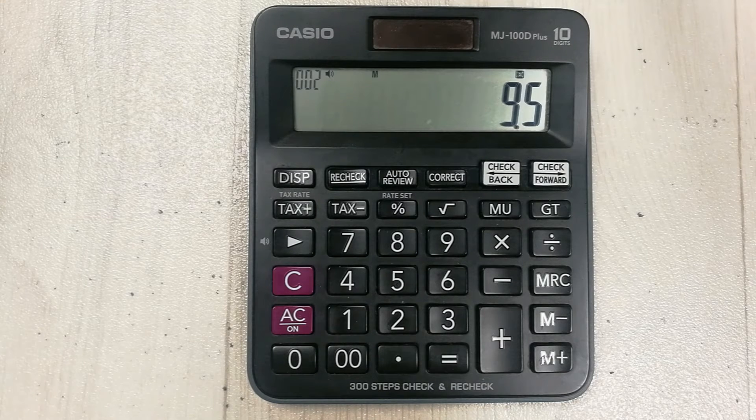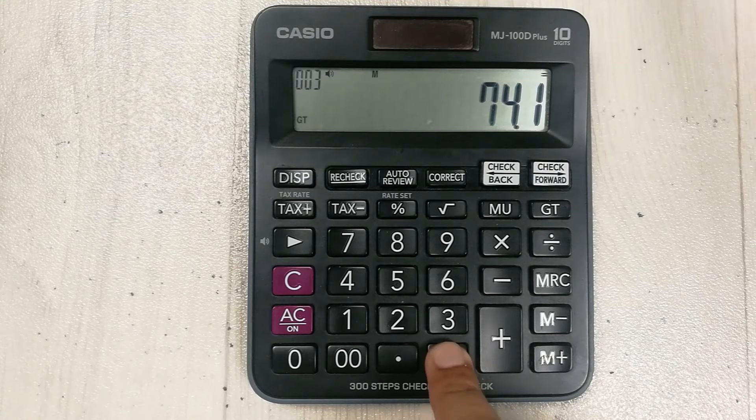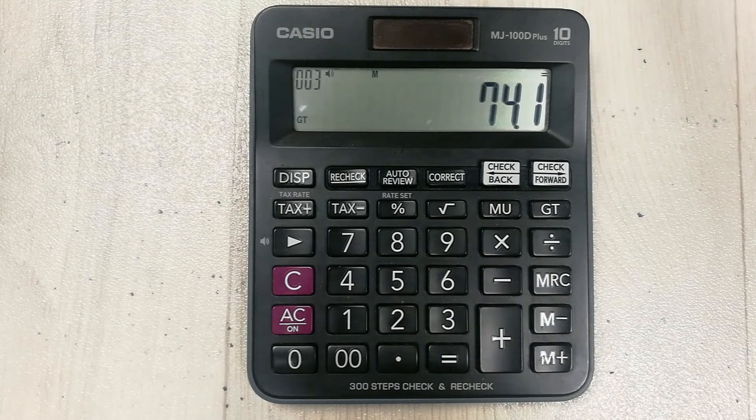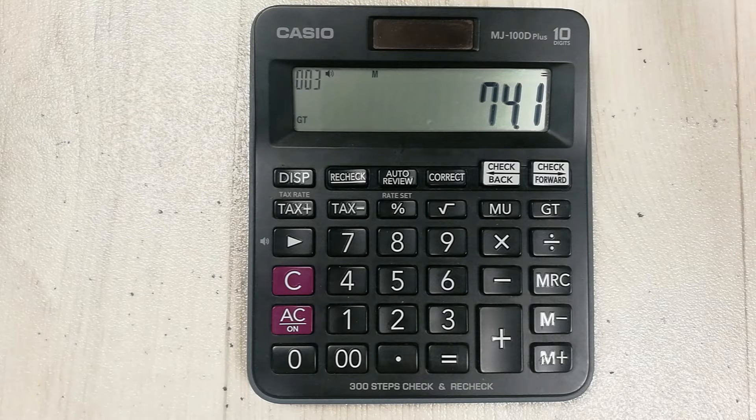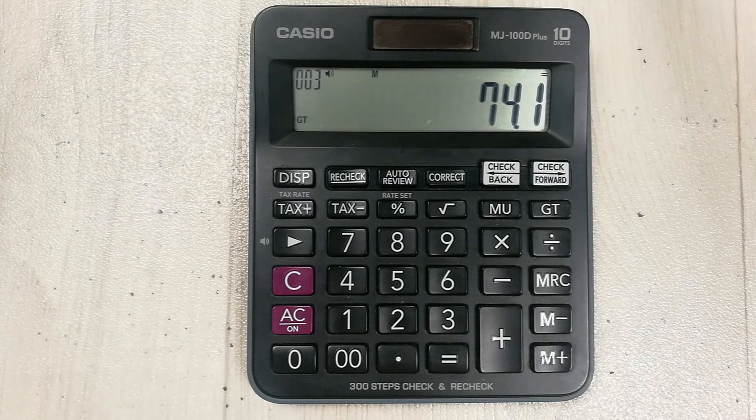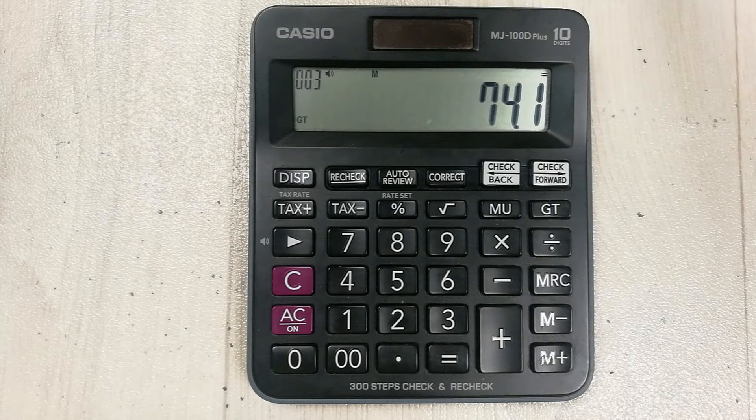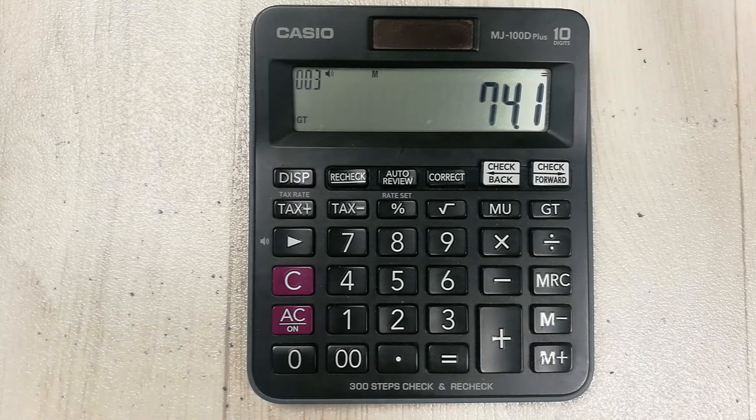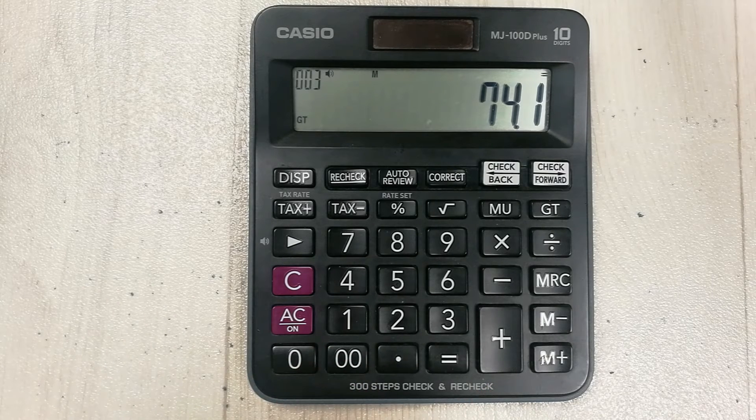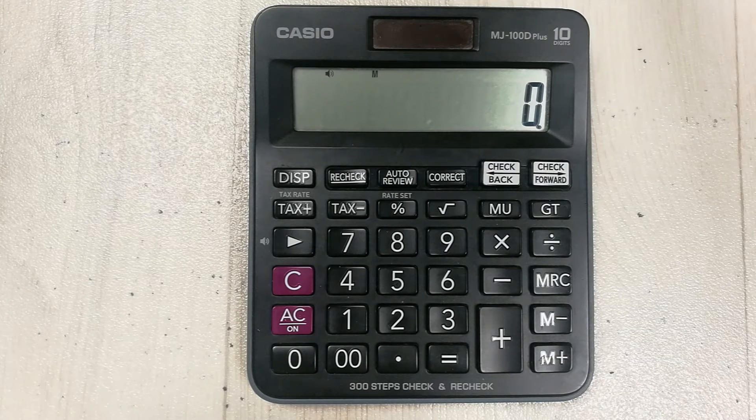So when we multiply with 9.5, then we press the equal button and here is our final answer. So you got 74.1 percent if your CGPA is 7.8.